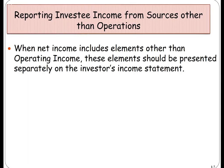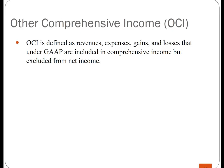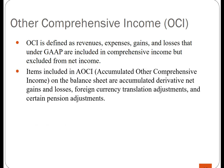Now let's go to another topic: what happens if we get income from sources other than operations? When net income includes elements other than operating income, these elements should be presented separately on the investor's income statement — examples include discontinued operations or other comprehensive income. Other comprehensive income consists of revenues, expenses, gains, and losses that under GAAP are included in comprehensive income but excluded from net income. It used to include adjustments to fair value for available-for-sale securities, but that is no longer true. Now, the only items included are accumulated derivative net gains and losses, foreign currency translation adjustments, and certain pension adjustments.